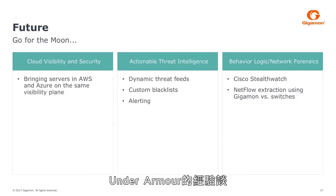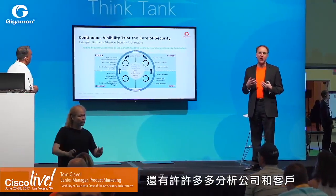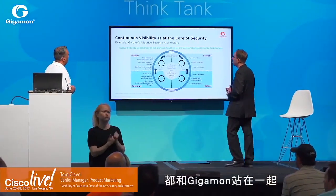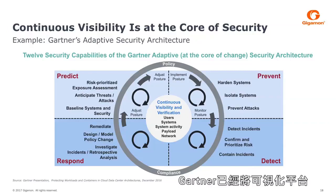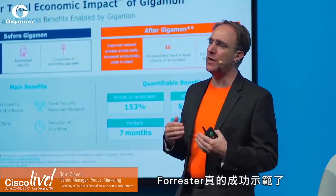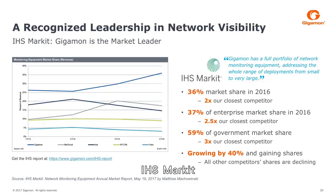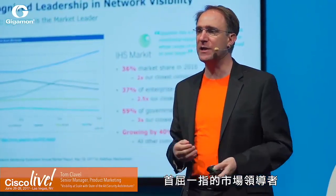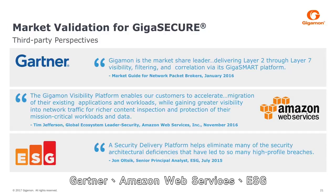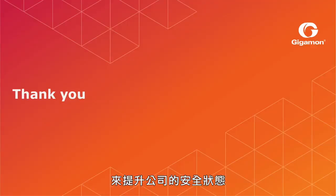But don't just take a customer's word for it. Multiple analyst firms and customers have been standing behind Gigamon. Gartner has put the visibility platform at the core of their security architecture recommendations. Forrester has built a strong case for the return on investment with a visibility platform. IHS Markets has recognized Gigamon as the number one market leader in the visibility platform space. And Gartner, Amazon Web Services, and ESG all stand behind Gigamon. Learn how you can improve your own security posture with Gigamon.